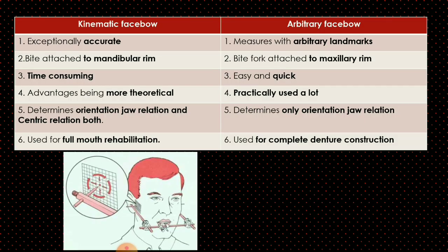The kinematic face bow is exceptionally accurate, whereas the arbitrary face bow is arbitrarily accurate and uses landmarks. In kinematic face bow, the bite fork is attached to the mandibular rim, whereas in arbitrary face bow it is attached to the maxillary rim. Kinematic is very time-consuming due to its complexity, while arbitrary is easy and quick. Kinematic is more theoretical, whereas arbitrary is more commonly used in practice. Kinematic determines both orientation jaw relation and centric relation, while arbitrary determines only orientation jaw relation. Kinematic is used for full mouth rehabilitation; arbitrary is used for complete denture construction.